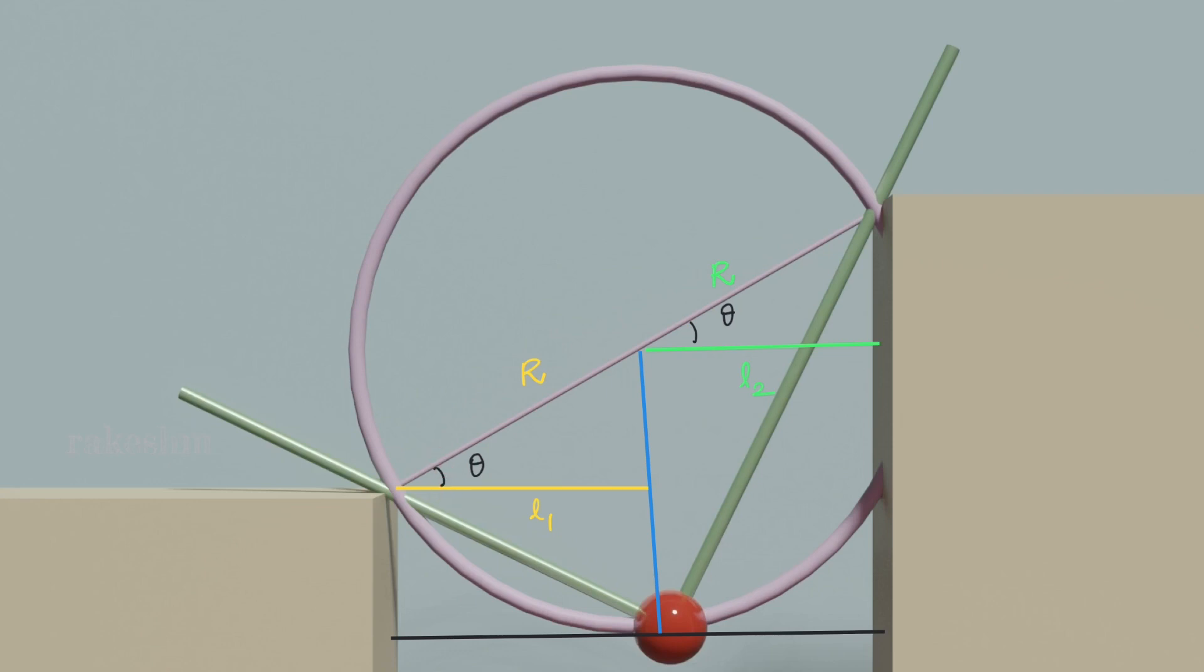These two angles are theta and theta and we can say that this length will be R cos theta and this also will be the same R cos theta. So we can say that this L1 and L2 will be equal.